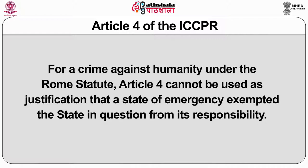Article 4 cannot be used as jurisdictional justification that a state of emergency exempted the state in question from its responsibility. Article 4(2) lists out rights from which no derogation is possible, as the rights are reflective either of peremptory norms or because derogation from them can never be justified in an emergency.